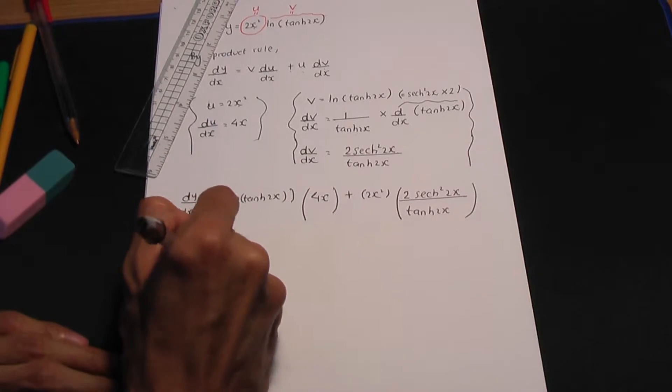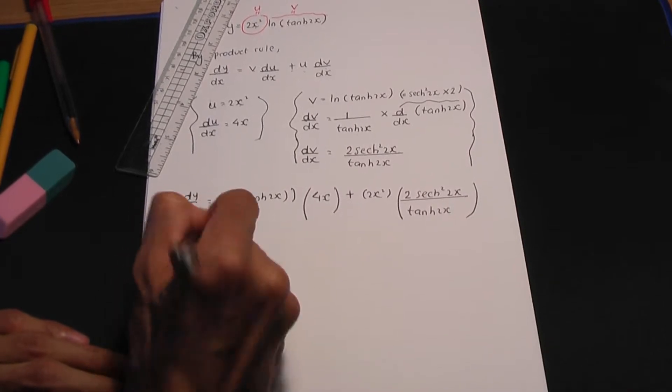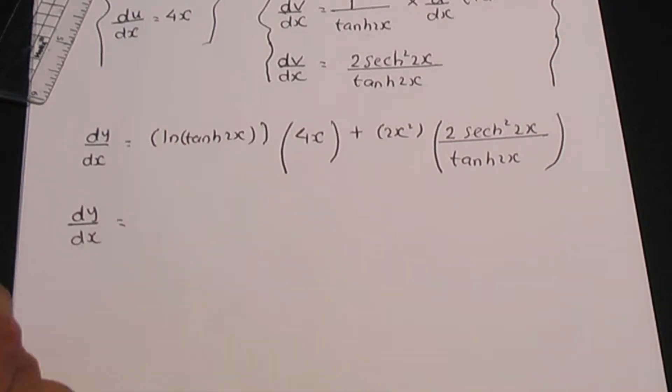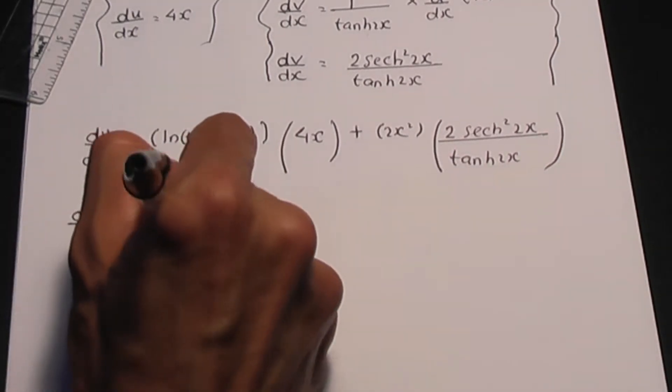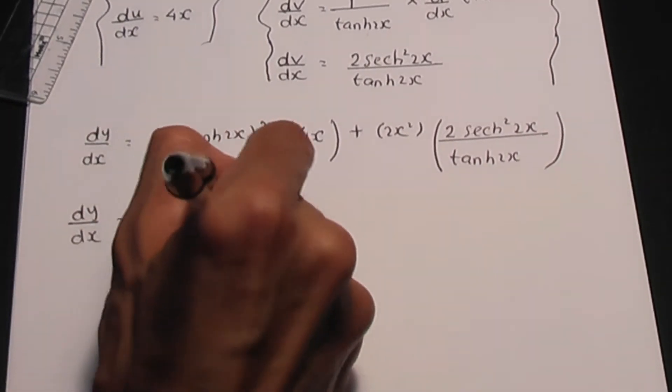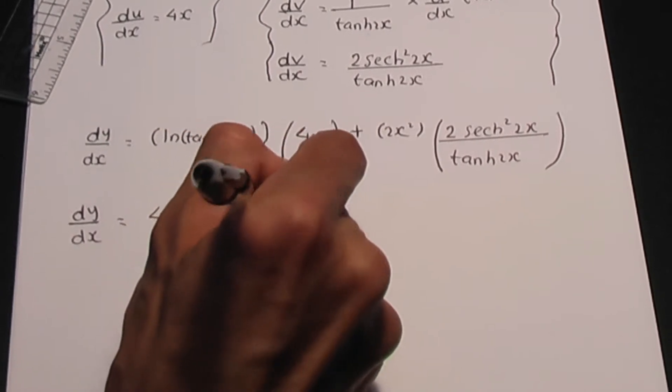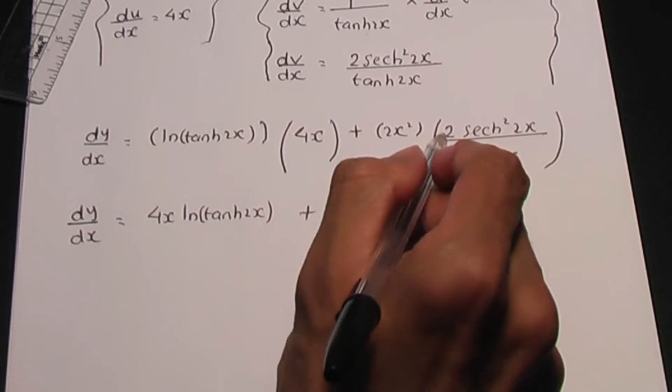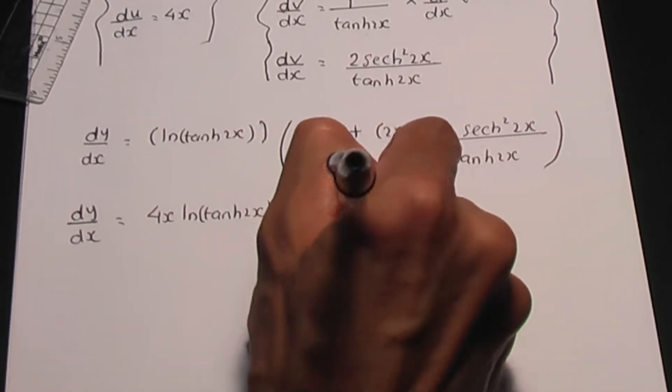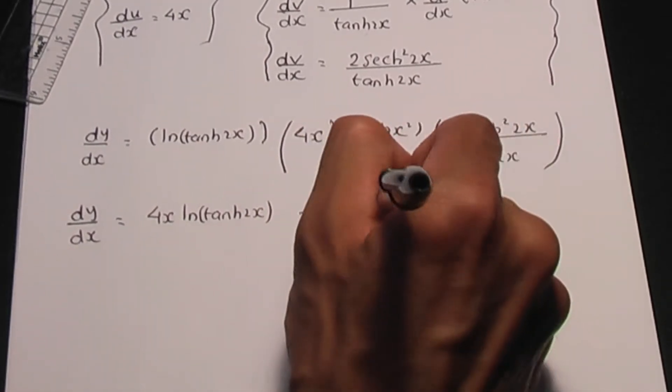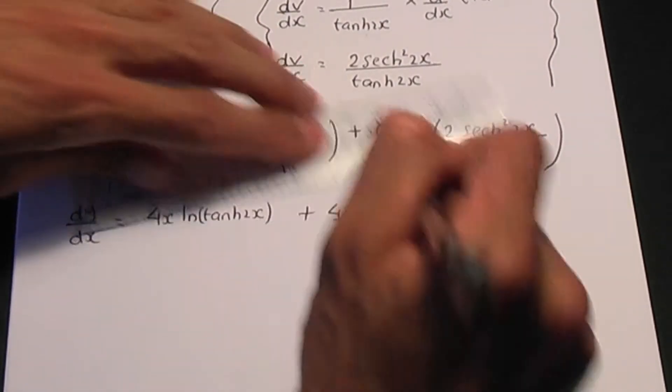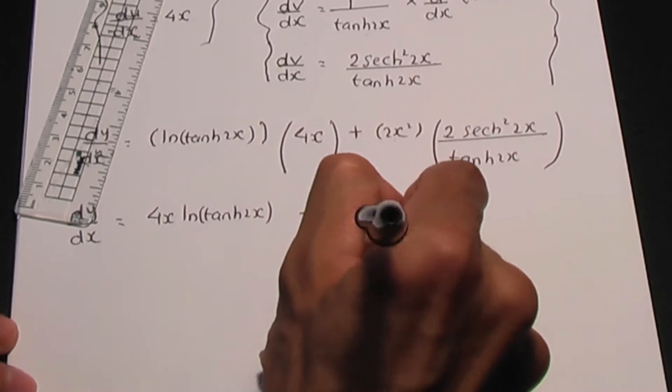So further to that, if we multiply the brackets, we're going to have 4x times ln hyperbolic tan 2x, that is 4x ln hyperbolic tan 2x, plus 2 times 2 times 2x squared is 4x squared hyperbolic sec squared 2x over hyperbolic tan 2x.